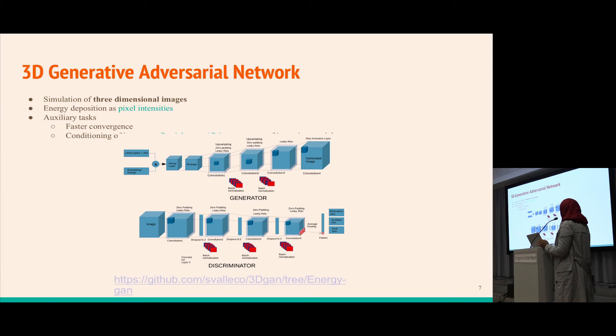The discriminator looks at each image to decide whether it's real or fake, assigns each image to a certain primary energy, and checks for total intensities deposited by a particle as an auxiliary loss.